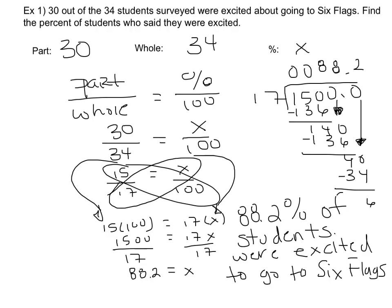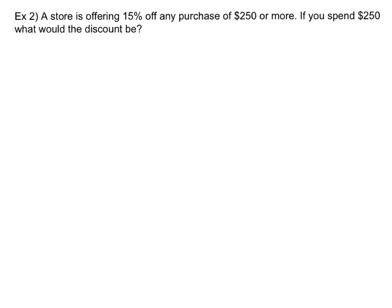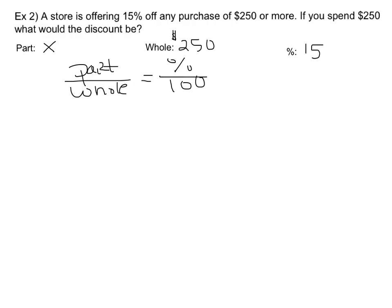Make sure you're answering the question that the question's asking. Here's another problem. A store is offering 15% off any purchase of $250 or more. If you spend exactly $250, what would this discount be? The three things to look for are: do you know the part, do you know the whole, or do you know the percent? They always need to tell you two of the three things, and the third is what the question asks. This problem tells you the percent — 15%. The $250 is the total money you're spending, so that's the whole. The part is the discount — that's what we're going to find. You can substitute that into your percent equation: part over whole equals percent over 100.